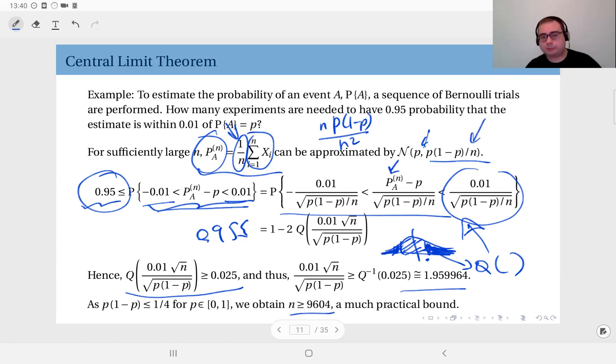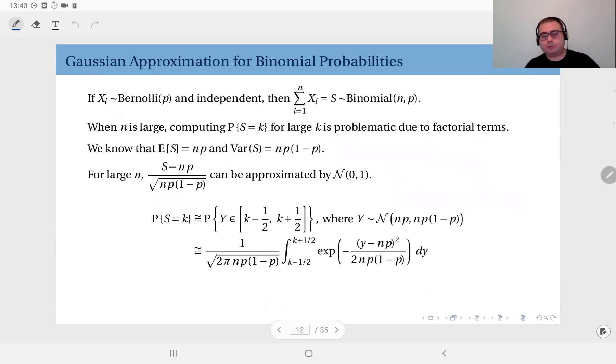So that's by definition a binomial distribution. So therefore from that point we can move on to the Gaussian approximation for binomial probabilities. And of course if you define the sum of iid Bernoulli random variables as S, that is by definition distributed with a binomial distribution with parameter n and p. Obviously when n is large.